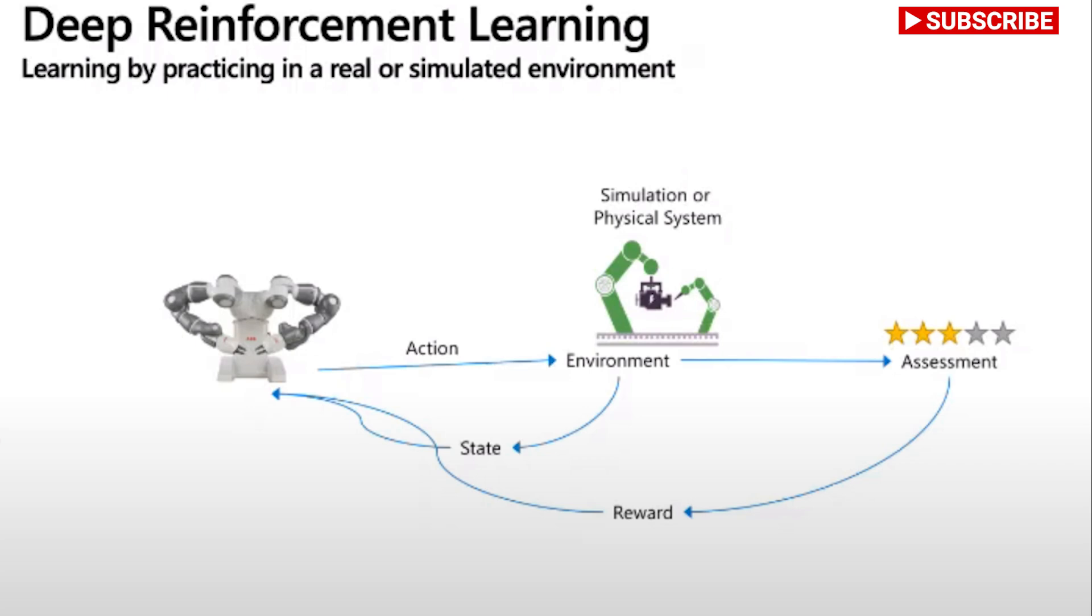Based on what action it took, we then give it an assessment like how did it perform, did that action get the outcome that we wanted, and then we assign a reward. The situation goes over and over again, so our agent takes an action and we assign it a reward based on how it performed until after several thousand or million iterations we have an agent that is trained to do what we wanted to do.